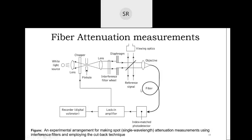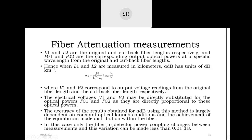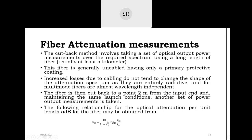Everything remains the same — the same fiber and components. We measure the output power for the given length, then cut the fiber from the front end at two meters and measure the power level again. We get two lengths — length one and length two — and calculate attenuation as 10 log of the ratio of output power at length one to that at length two.